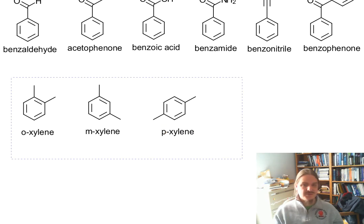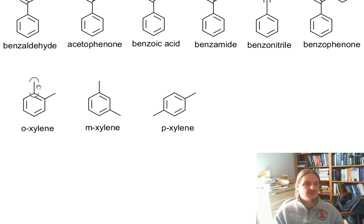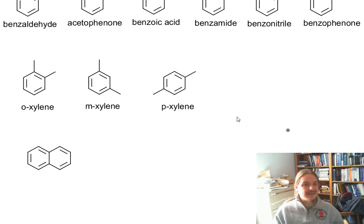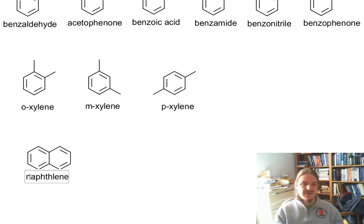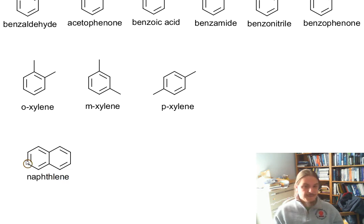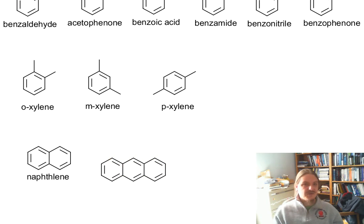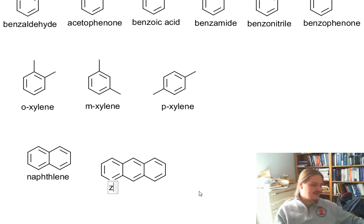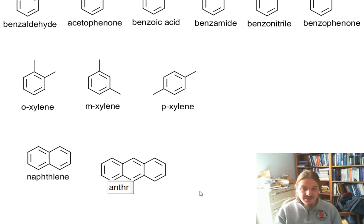There are other di-substituted benzenes as well — for example, catechols and resorcinols and things with alcohols and a number of other functional groups. And to finish off, some of the polycyclic aromatic hydrocarbons have names that continue to be used because they are much easier to deal with than the IUPAC-recommended names. For example, this is naphthalene. And if you string three of them together, you have anthracene.